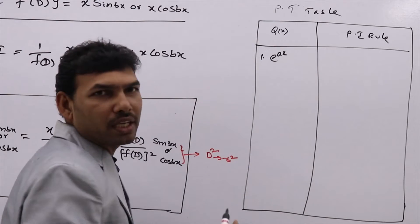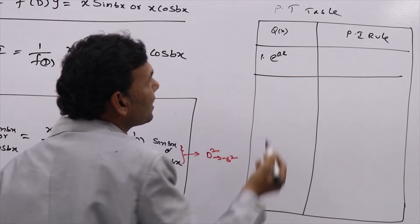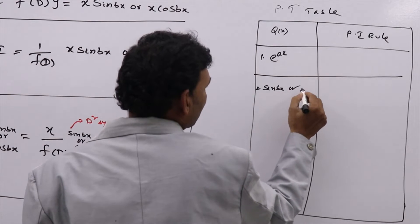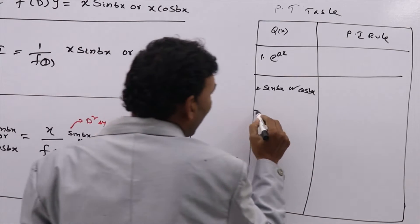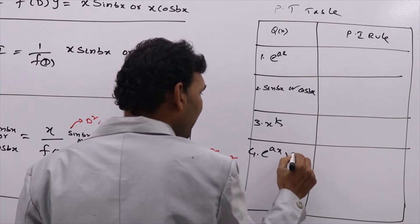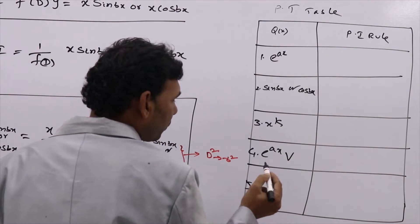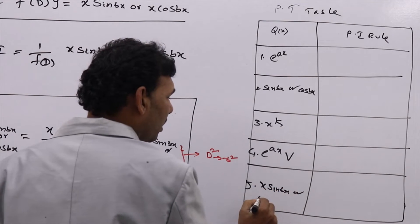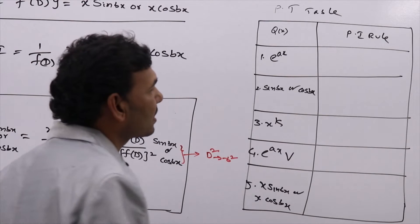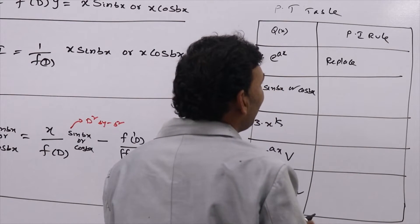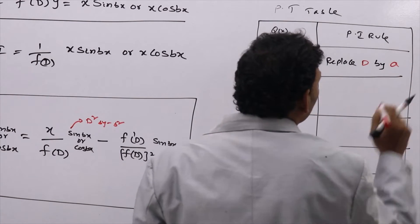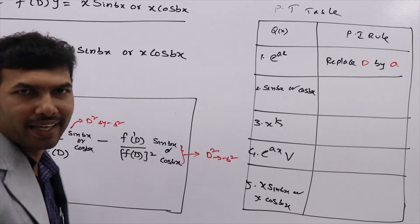If you have e^(2x) or e^(3x), what will you do? If you have e^(ax), replace D by A — that is, write the value A wherever you have D. If you have e^(2x), write 2 in the place of D. If you have e^(3x), write 3 in the place of D.